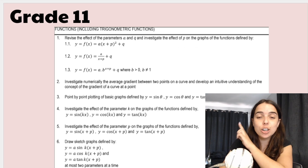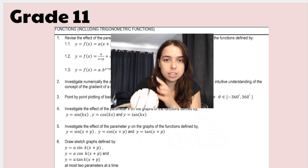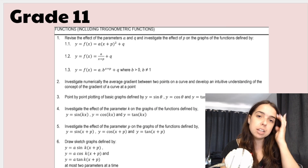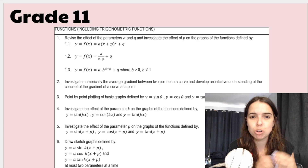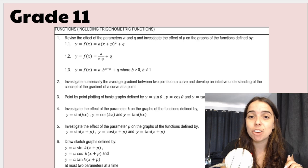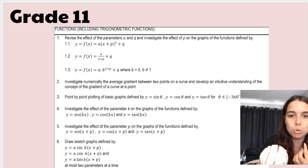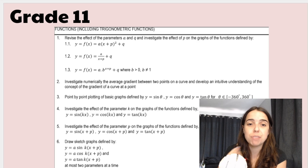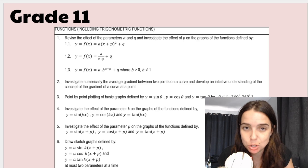Then we've got functions, including trigonometric functions. You should recall that in grade 10 we focused on the effect of parameters A and Q on functions — for example, Q moves the graph up or down. This year in grade 11 we add P into the mix, and you need to know the effect of parameter P on these graphs. You also look at trig graphs with an additional parameter. Obviously you need to sketch graphs and know the effects of all these different parameters, as well as everything you learned in grade 10. So once again, go over your grade 10 functions — you won't be sorry.